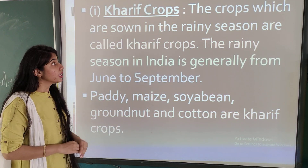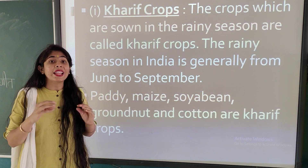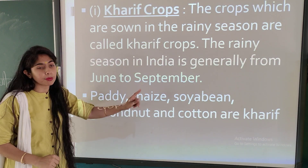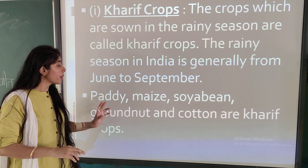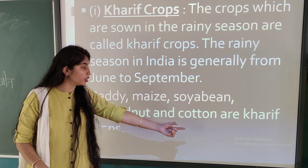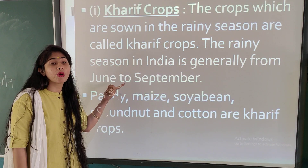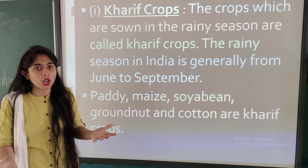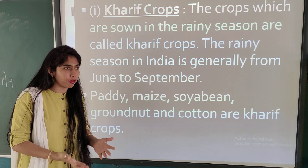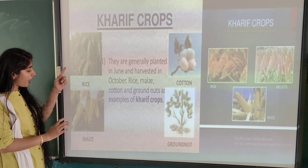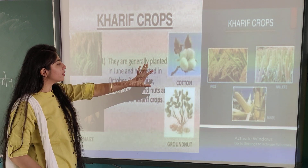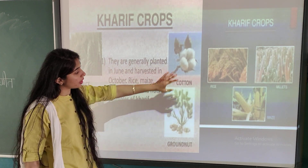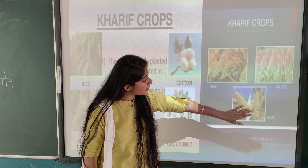The crops which are sown in the rainy season are called kharif crops. They need more water. The rainy season in India is generally from June to September. Rice, that is paddy, maize, soya bean, groundnut, and cotton are kharif crops. They are generally planted in June and harvested in October. Rice, maize, cotton, and groundnuts are examples of kharif crops. Other examples include millets and maize.